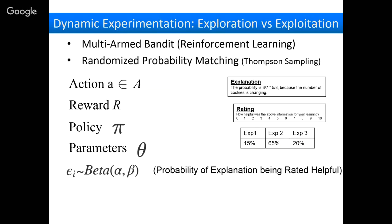If you have a beta with parameters 19 and 1, it's very peaked around 95%, meaning you think the probability this explanation is helpful is really high. That's our prior. Every time someone gives a rating of an explanation, we assume that falls on a binomial distribution with 10 samples (since they're rating 0 to 10), and the probability of success is the probability of the explanation being rated helpful. Using Bayesian inference, we keep updating the beta distribution — at the beginning maybe every explanation looks good, but when someone rates one a 1 to 6, it updates accordingly.